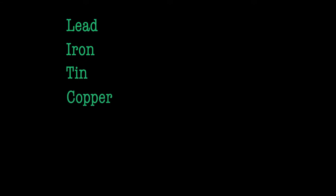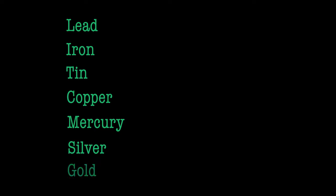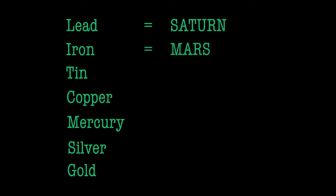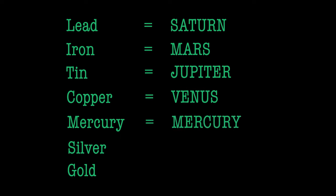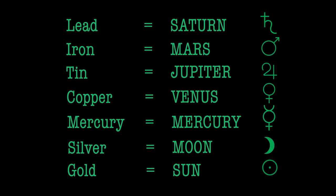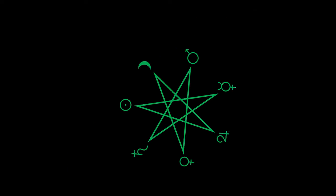There are seven metals that alchemists work with and they correspond to seven planets. These metals are lead, iron, tin, copper, mercury, silver, and gold. The planets that correspond to these metals are also seven: Saturn, Mars, Jupiter, Venus, Mercury, the Moon, and the Sun. Gold is the closest metal to light, and that's why it's represented by the Sun. Silver, however, is represented by the Moon.